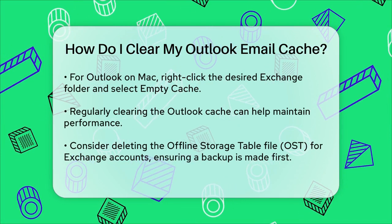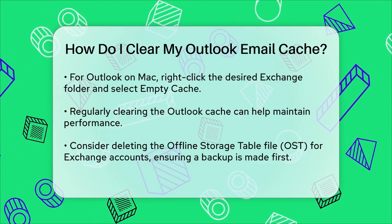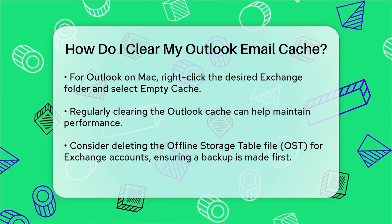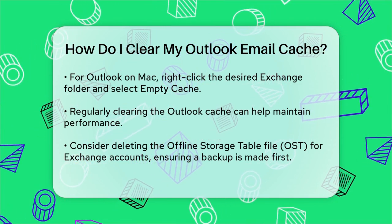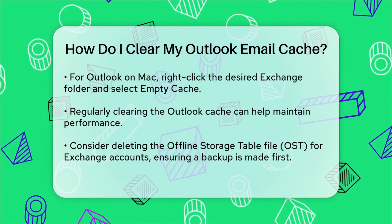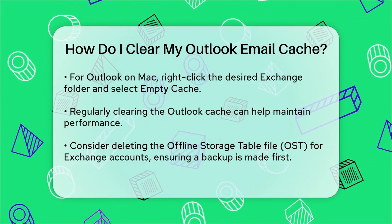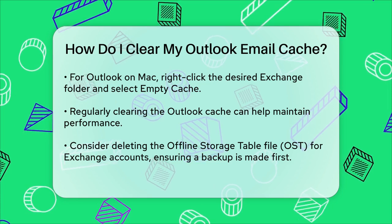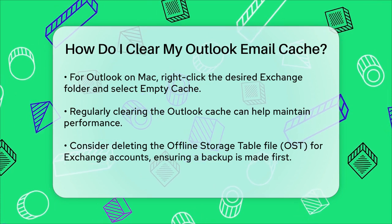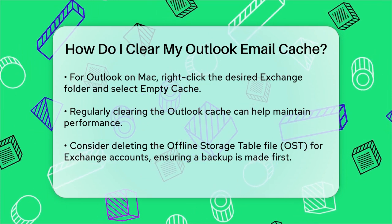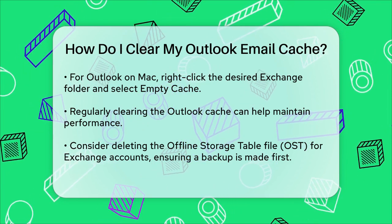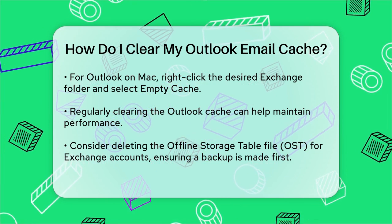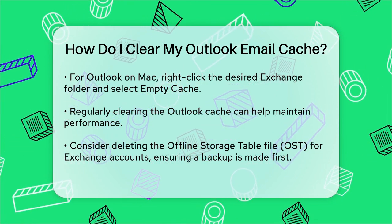Clearing Cache on Outlook for Mac (Legacy). For Outlook on Mac, navigate to the Exchange folder you want to clear the cache for. Control-click or right-click the folder, select Properties, and then click Empty Cache on the General tab. Outlook will automatically download the items from the Exchange server once the cache is cleared.